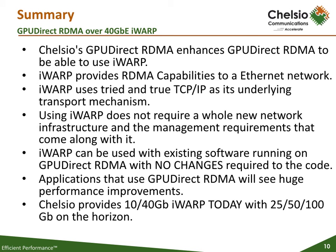In summary, GPUDirect RDMA provides the ability to work over iWARP. iWARP enables RDMA over a standard Ethernet network using TCP/IP, which is a mature and proven technology. iWARP does not require the user to purchase and install a whole new network infrastructure. Applications that use GPUDirect RDMA do not need to be changed to use iWARP as a transport, and applications using GPUDirect RDMA will see huge performance enhancements. Chelsio provides 10 and 40 gigabit Ethernet today, but 25, 50, and 100 gigabit Ethernet is on the horizon.